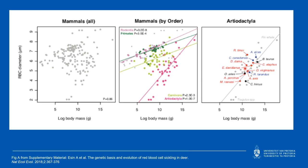In the artiodactyls — some of which are familiar to us, including the goat, sheep, and cow — we can see that as body mass increases, red cell size does get bigger. This variation in red cell size is important because it has implications for analyzing hematology samples from non-domestic species.